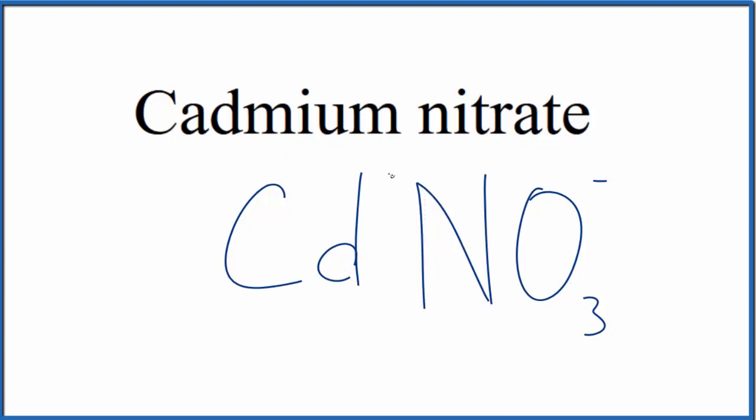So although cadmium is a transition metal, it's almost always 2 plus. And we said the whole nitrate here, this whole thing, is 1 minus. So we're going to need two of these nitrate ions here to balance this 2 plus.